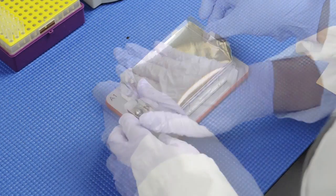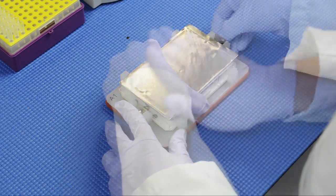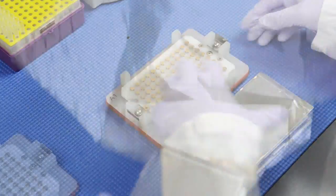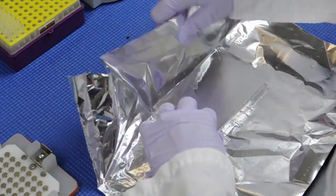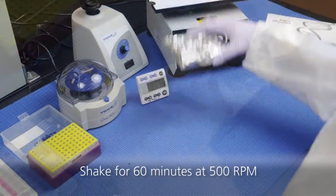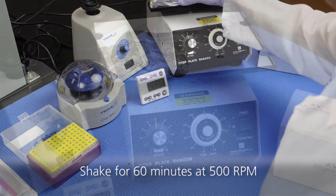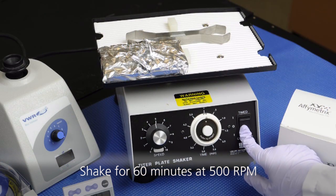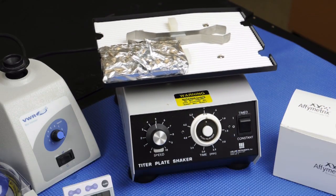Once the samples are loaded, seal the plate with a plate seal. Because the beads are sensitive to light, wrap the plate in aluminum foil and incubate for 60 minutes at room temperature. Set the microtiter shaker at 500 RPM.